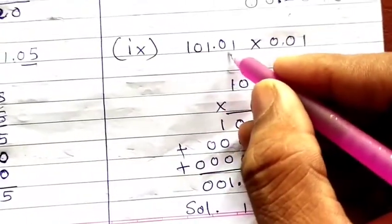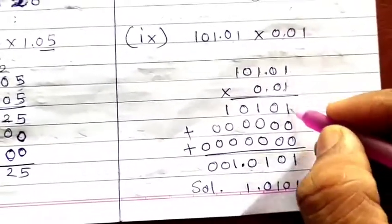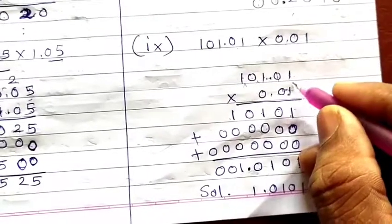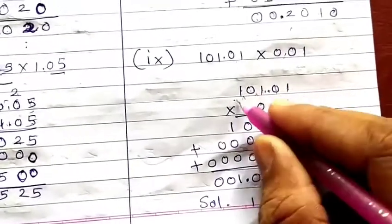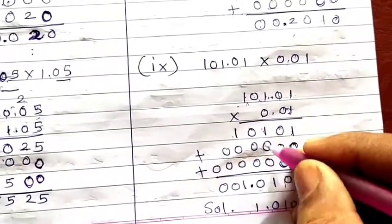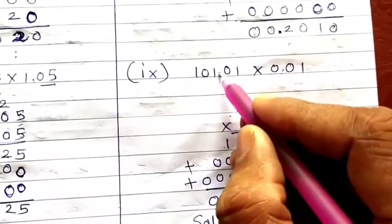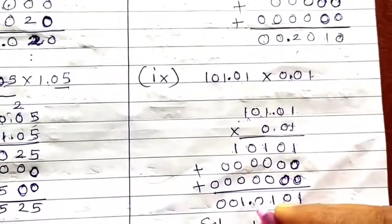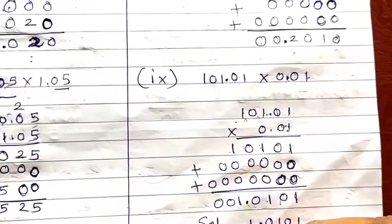Then 101 into 0.1 into 0.01. Multiply: 1 by 1 is 1, 1 by 0 is 0, 1 by 1 is 1, 1 by 0 is 0, 1 by 1 is 1. Place a zero by default; multiply all digits by 0 — you get 0. Place two zeros by default; multiply all digits by 0 — get 0 again. Adding: 1, 0, 1, 0, 1, 0, 0. Count decimals: 0 in 101, then 1 and 2 digits in 0.1 and 0.01, total 4 digits after decimal. Leave 4 digits from the last — answer is 1.0101. The leading zero has no value.